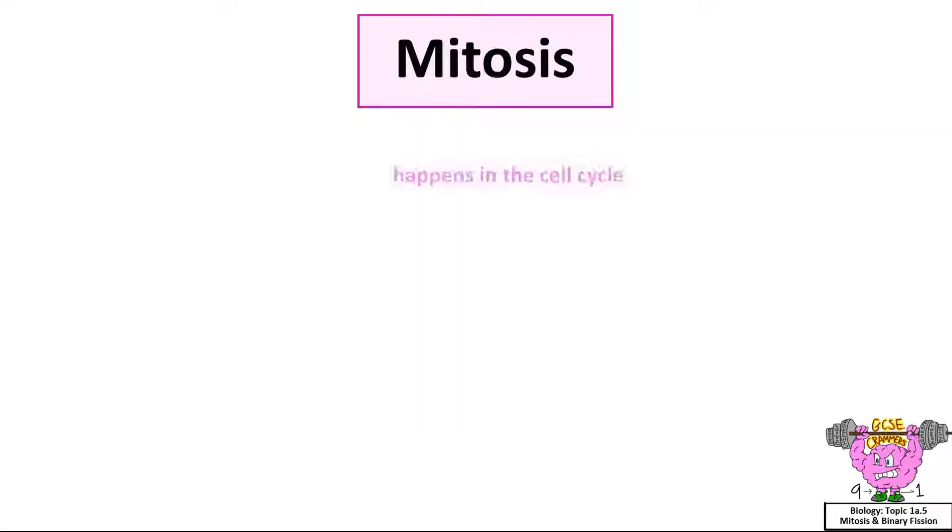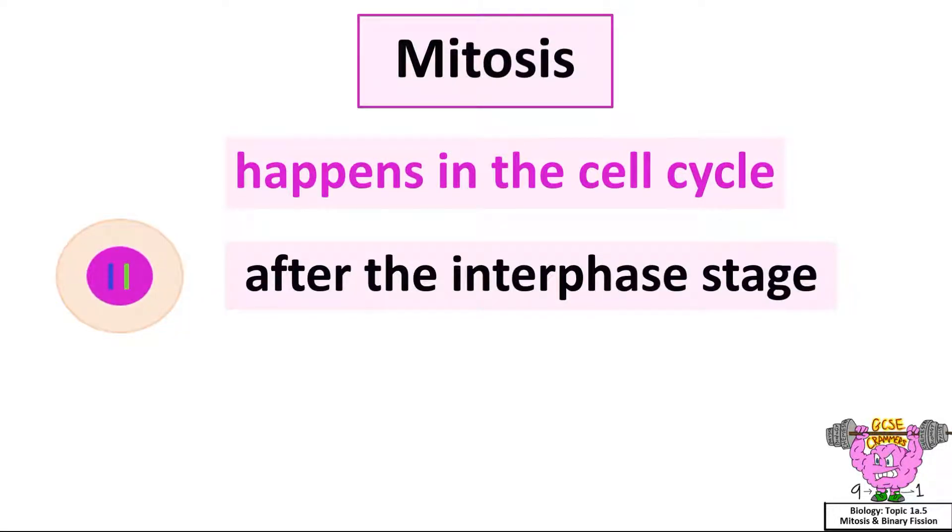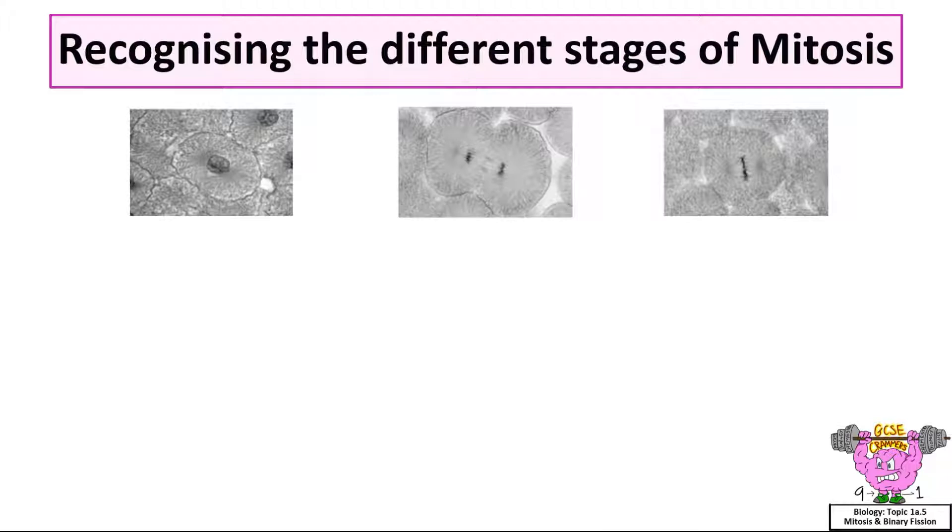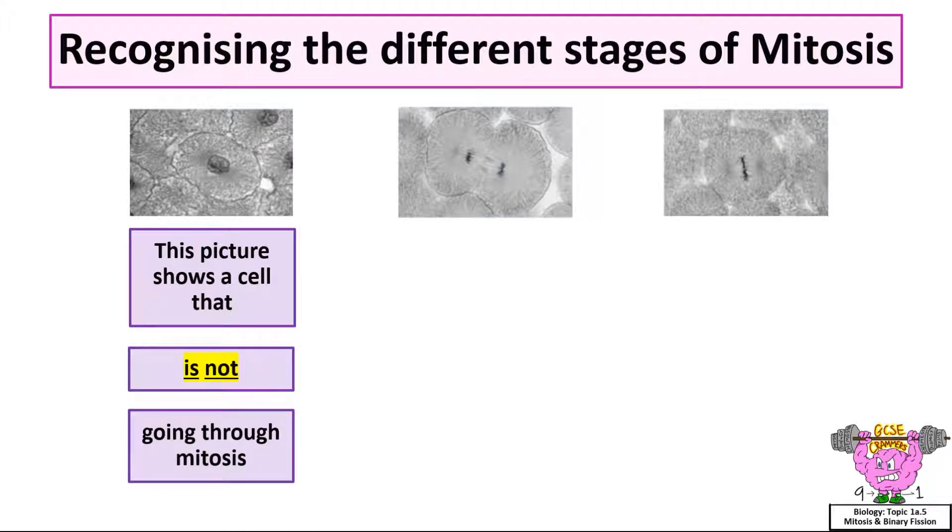Mitosis happens in the cell cycle, after the interphase stage, when the X-shaped chromosomes are formed. Recognizing the different stages of mitosis from photographs. This picture shows a cell that is not going through mitosis, because you can clearly see the whole cell and nucleus.